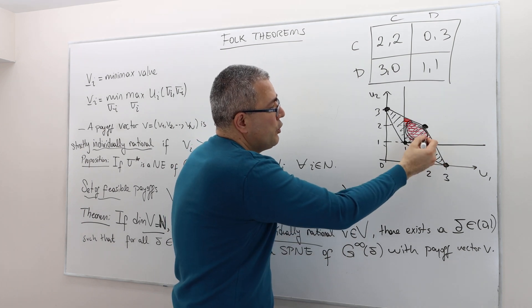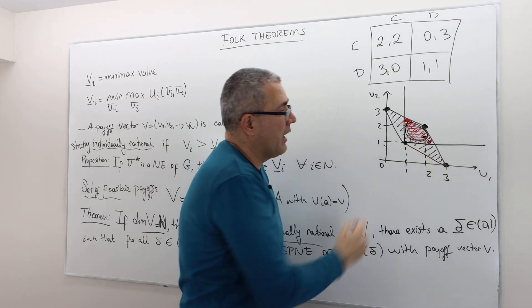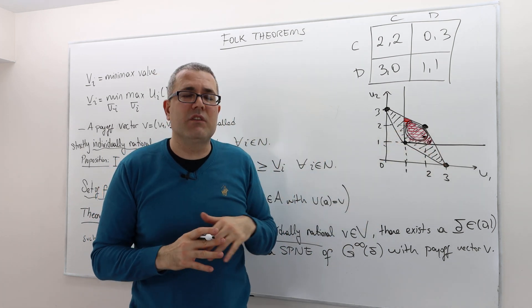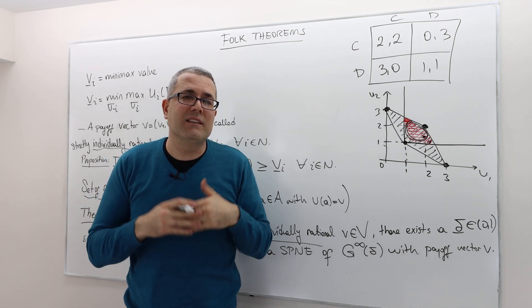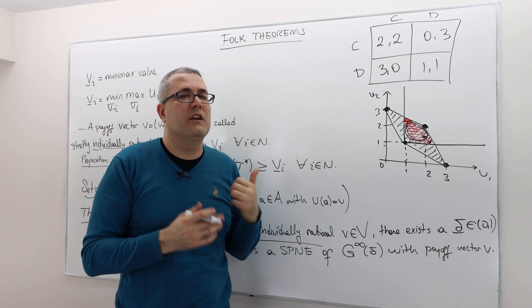Any payoff in this region, any payoff vector in this region, can actually be supported. I mean, they can achieve 2-2, but you know, they may also achieve something different than 2-2. For example, 2 and 1.5, all right? Or 2-point something, I don't know what it is, but 1-point something. All right, so any vector in this region can be supported as a subgame perfect Nash equilibrium. This is what this Folk theorem says.